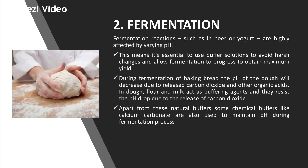Moving on to fermentation industries — various fermentation reactions take place at an optimum pH. For example, during the production of beer or yogurt, the processes are highly affected by changes in pH. It is therefore required to use buffering solutions to avoid harsh pH changes and allow fermentation to progress. During fermentation of baking breads, the pH of the dough decreases due to release of carbon dioxide and other organic acids. In dough, flour and milk act as buffering agents and resist the drop in pH. Apart from these natural buffers, chemical buffers like calcium carbonate are also used to help maintain pH during dough preparation.